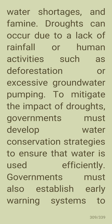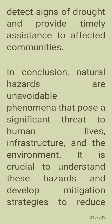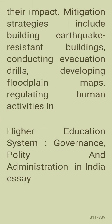To mitigate the impact of droughts, governments must develop water conservation strategies to ensure that water is used efficiently. Governments must also establish early warning systems to detect signs of drought and provide timely assistance to affected communities. In conclusion, natural hazards are unavoidable phenomena that pose a significant threat to human life, infrastructure, and the environment. Mitigation strategies include building earthquake-resistant buildings, conducting evacuation drills, developing floodplain maps, and regulating human activities.